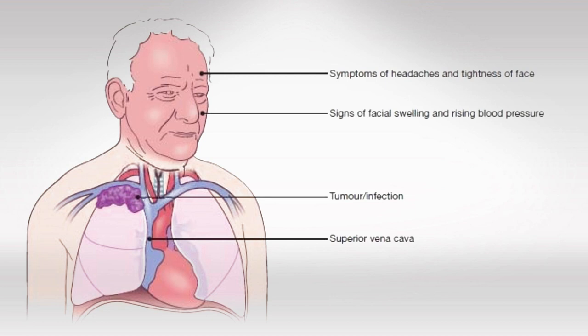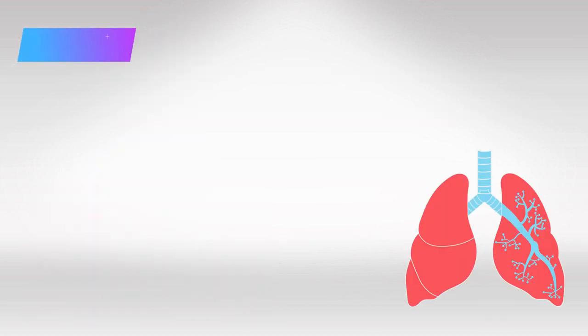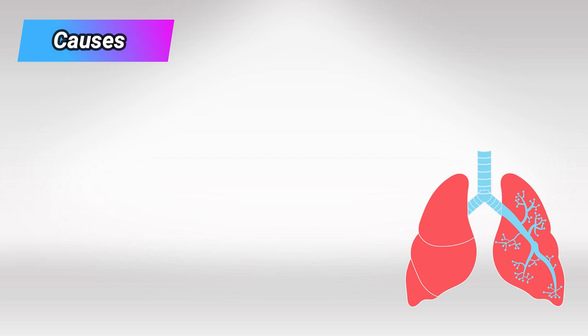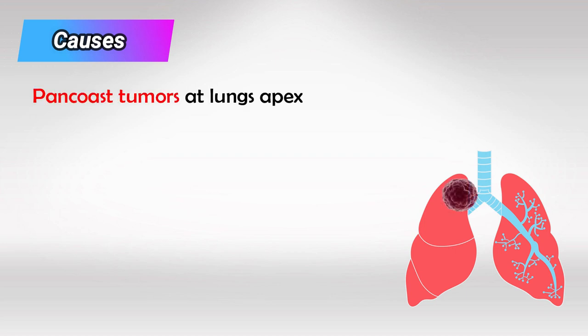This condition is a medical emergency. When it comes to the causes that would compress the superior vena cava, the most common culprit are tumors — especially lung tumors in the upper part, which we call Pancoast tumors. Mediastinal tumors can also compress the superior vena cava.